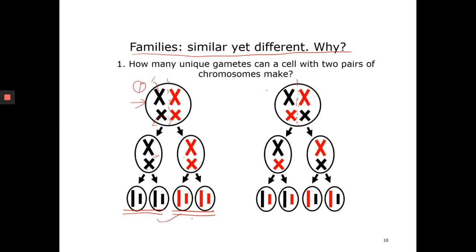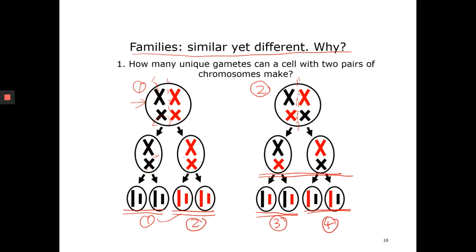That's only one scenario. In the second scenario, because everything moves randomly, you might have the big chromosome from the father and the small chromosome from the mother end up on one side of the equator, and the big one from the mother and the small one from the father on the other. This gives you two more types of gametes, all with different combinations of chromosomes and therefore different genetic makeup.